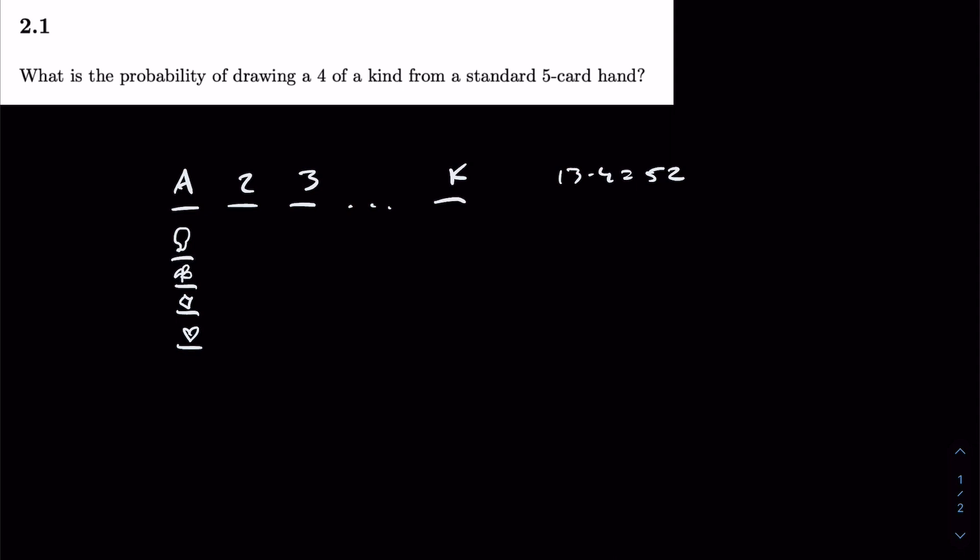We're asked to calculate the probability of drawing a four of a kind from five of these 52 cards, meaning that we draw five cards randomly without replacement, and we want four of those five to be of the same rank — they could all be aces, twos, kings, jacks, whatever. And the fifth card can be any of the remaining ranks.